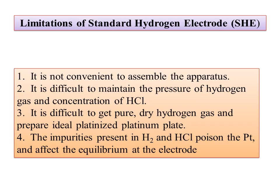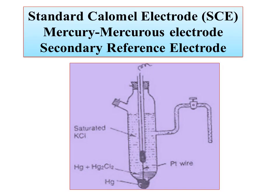There is a limitation: it is very difficult to set up the apparatus. If there is a glass electrode or gas electrode, you must maintain hydrogen gas pressure throughout the experiment and keep the HCl concentration exactly the same. It is difficult to get pure hydrogen gas samples.